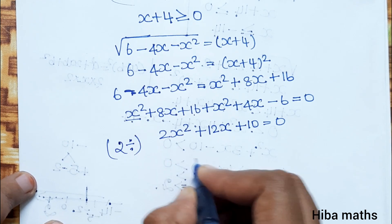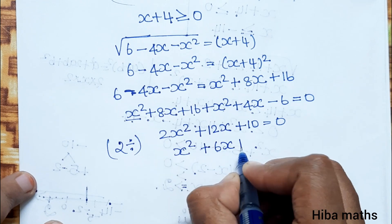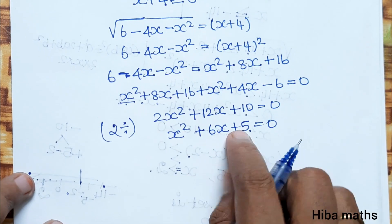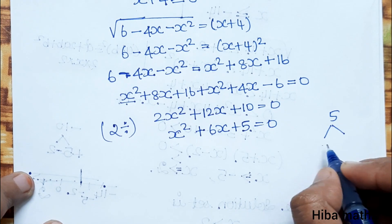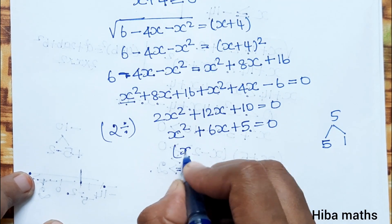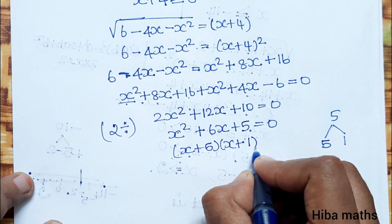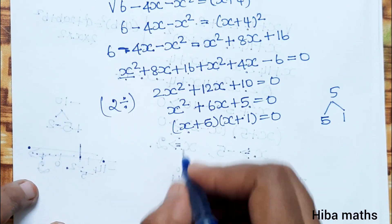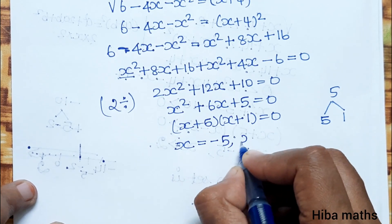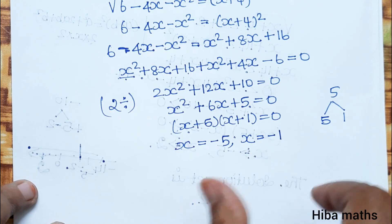Now all terms are divisible by 2, so divide by 2. We have x squared plus 6x plus 5 equal to 0. Now we factor: 5 times 1 is 5, and 5 plus 1 is 6. So (x plus 5)(x plus 1) equals 0, giving x equals minus 5 or x equals minus 1. These are our possible solutions.